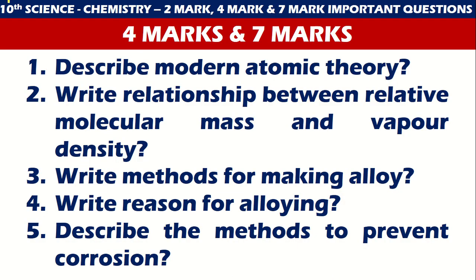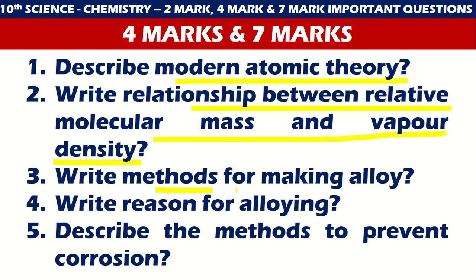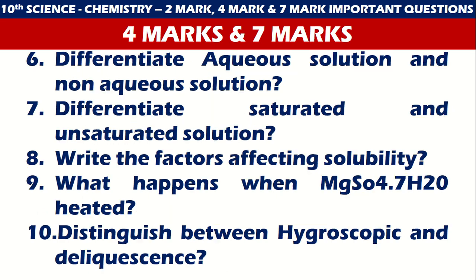For four and seven marks, the first five questions are: describe modern atomic theory, write the relationship between relative molecular mass and vapor density, write methods of making an alloy, write reasons for alloying, and describe the methods to prevent corrosion.